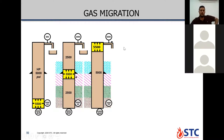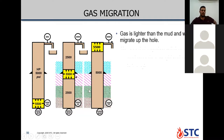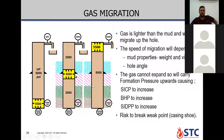When the influx reaches the surface, the 5500 psi pressure affects the whole system. You will find that bottom hole pressure is 10,500 psi.